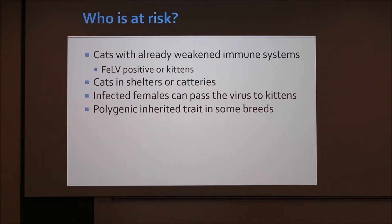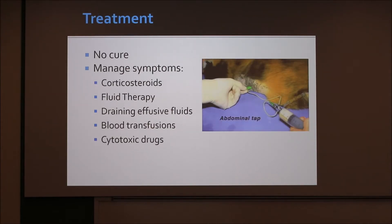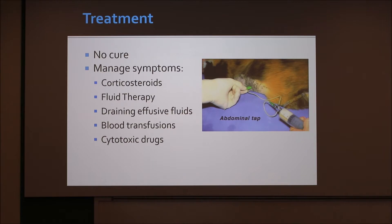Going back to that syringe — was it a white, milk-colored fluid? Yes, a white fluid. Because that's not normal to have a white-colored fluid in the abdominal cavity. Usually if you do a tap on a normal animal, it's basically clear.